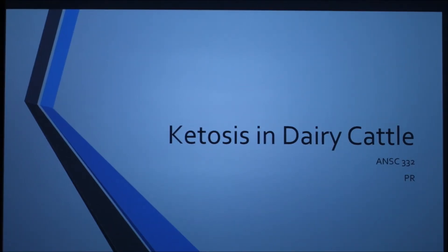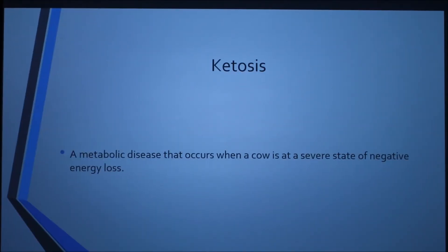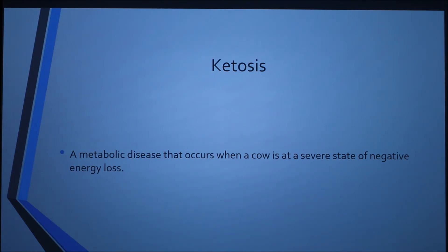I'm going to be talking about ketosis in dairy cattle. Ketosis is a metabolic disease that occurs when a cow is in a severe state of negative energy balance. The cow metabolizes large quantities of body fat but cannot convert this to energy in the usual ways. Instead, ketone bodies are produced, which in small amounts can be used by the cow for energy. However, in large amounts, they cannot all be used and ketone levels increase in the blood.